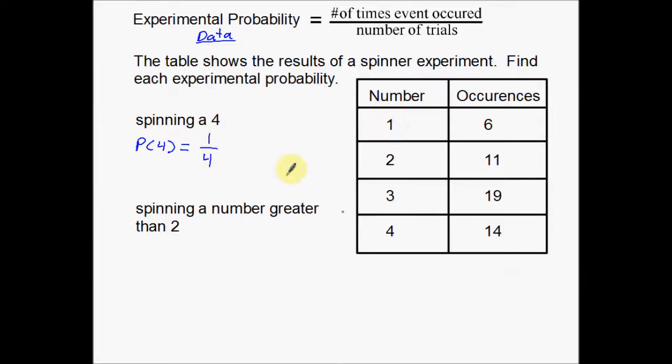The number 4 is the one that I want over a total of 4 numbers that I could get. That's theoretical probability. But we're not going to be using that.